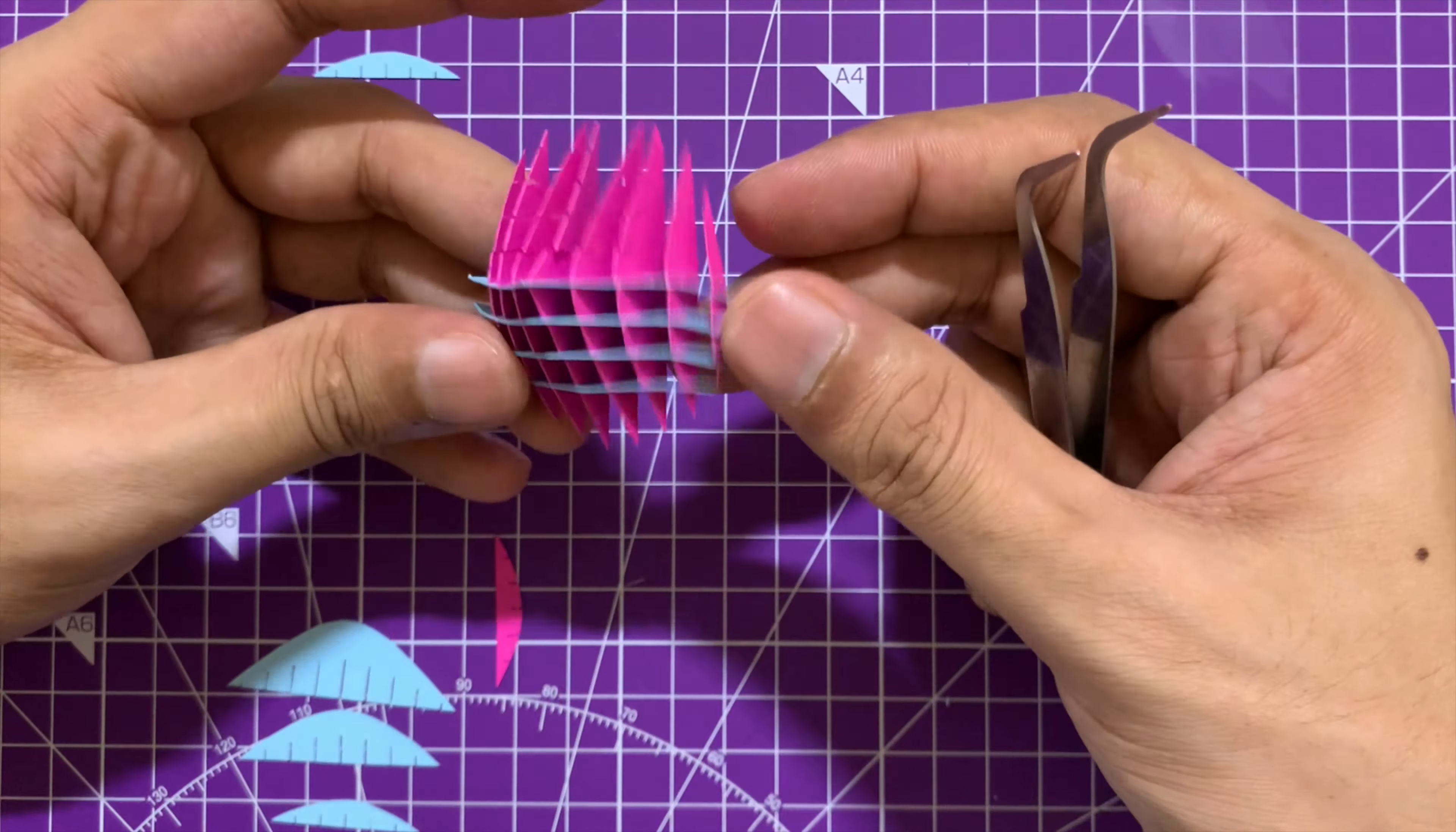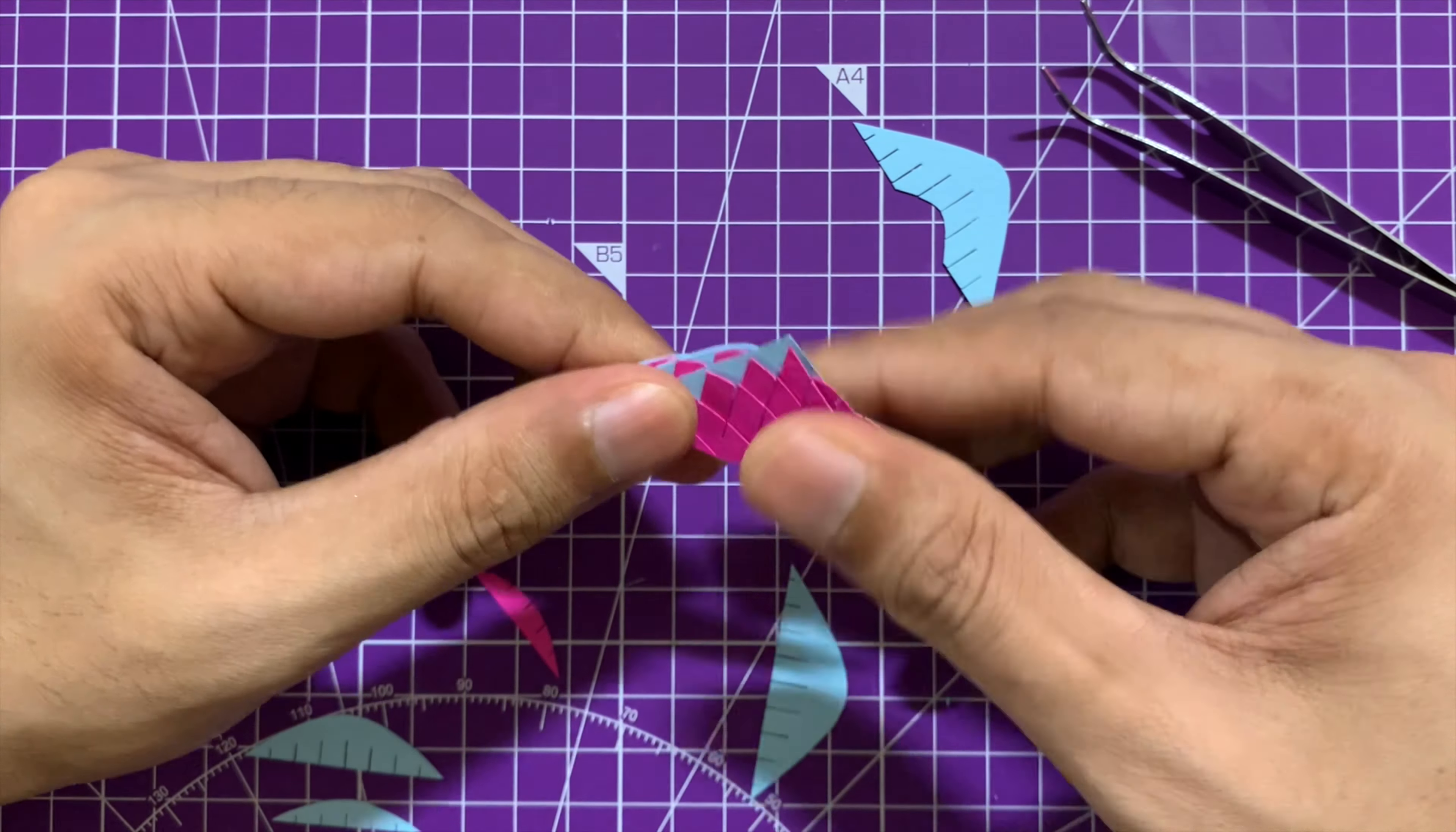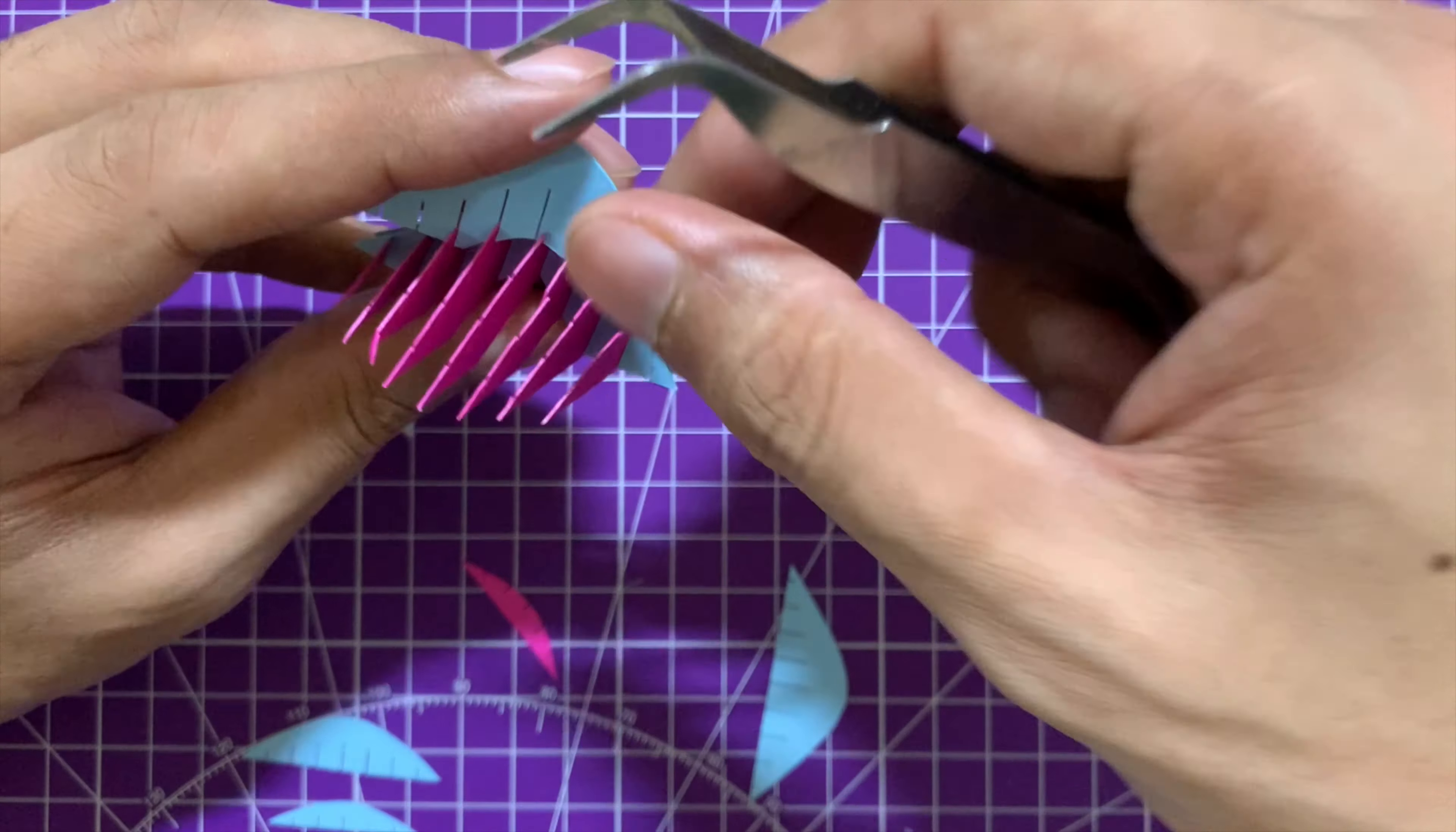Another way to check if you are assembling the model right is that you keep on flattening the model in between to see if it is getting flattened or not. Because that is the test of a correctly assembled slice form model. So keep on flattening in between and see if you are able to do it. If you are not able to do it then that means that somewhere you have assembled something in the wrong slot. So that's a good test to see if you are doing things correctly.